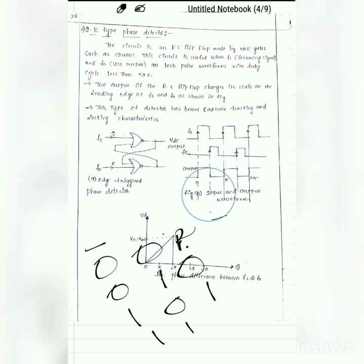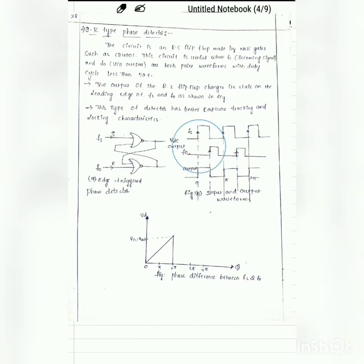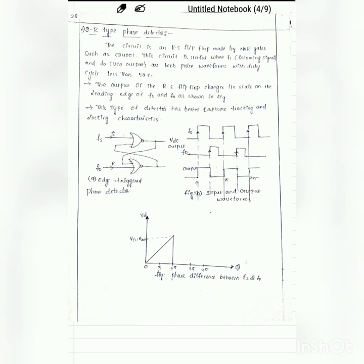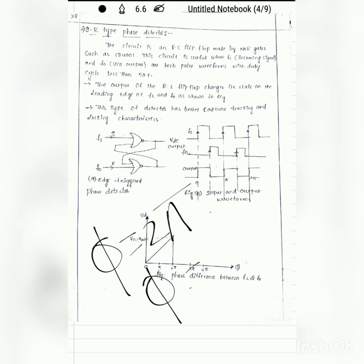Using this truth table to analyze the circuit: when S = 1 and R = 0, the output is 1; when S = 0 and R = 1, the output is 0. In this way the SR type phase detector detects the error signal. When drawing the curve of phase difference versus output voltage, the maximum error voltage occurs when the phase difference is 2π — compared to the XOR detector where maximum error voltage occurs at a phase difference of π.